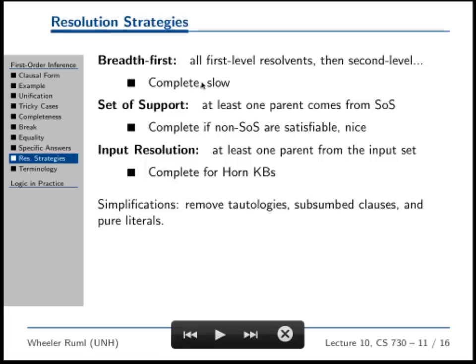So the stupid way of doing resolution is breadth first, where you take everything in the KB and resolve it against everything else. You guys are going to have to implement something called set of support resolution. And what that means is you're going to have your KB, but there's going to be a smaller set called the set of support. And every time you do a resolution, at least one of the parents is going to have to come from the set of support, and this resolution strategy is only complete if the clauses not in the set of support are satisfiable. Now, when we start off with our theorem proving, what do we know as far as the satisfiability of any of our clauses?